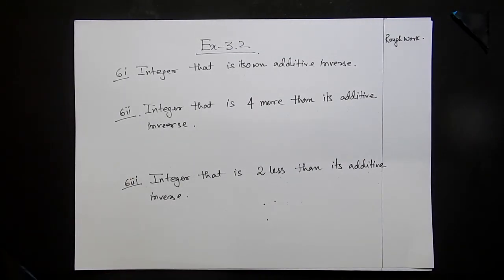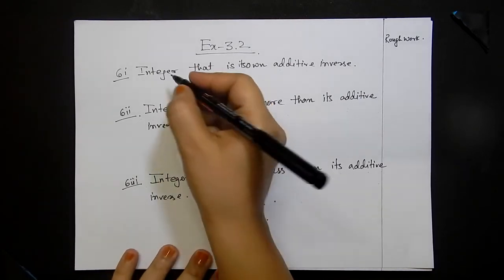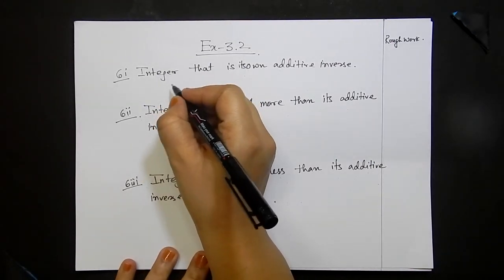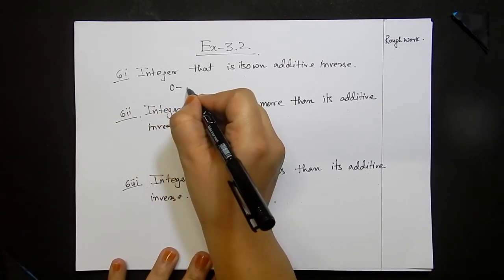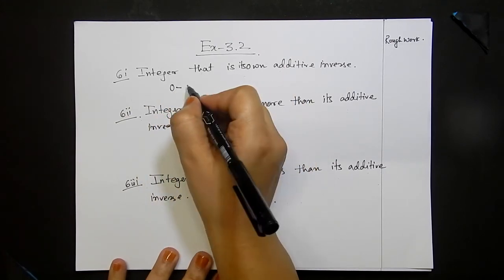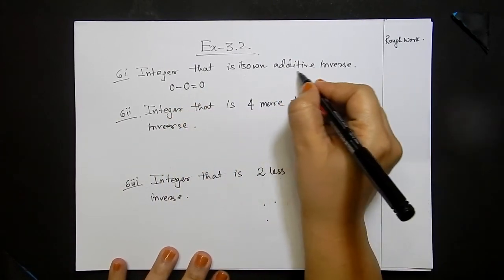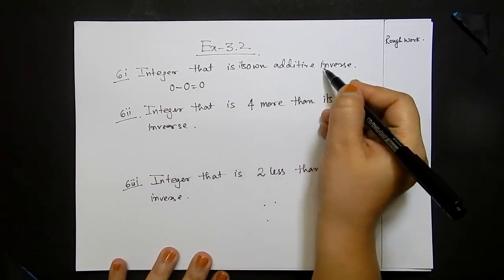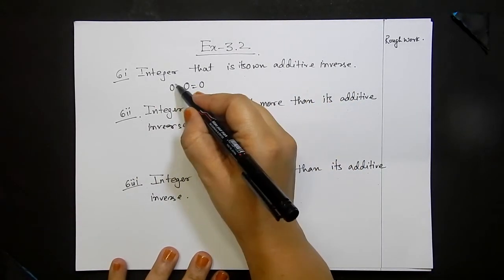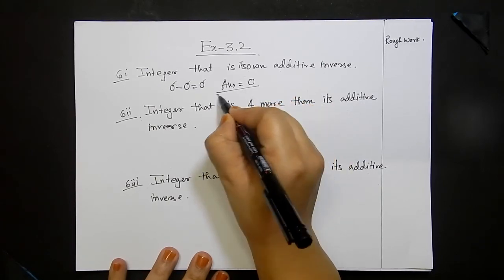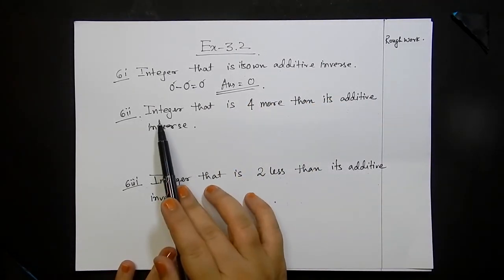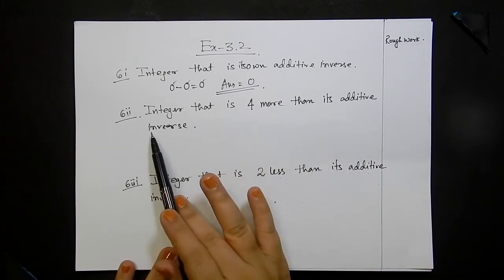Now question number 6: write an integer that is its own additive inverse. The additive inverse of any number is zero minus that number. So zero minus zero is zero. Therefore zero is the integer equal to its own additive inverse. The answer is zero.